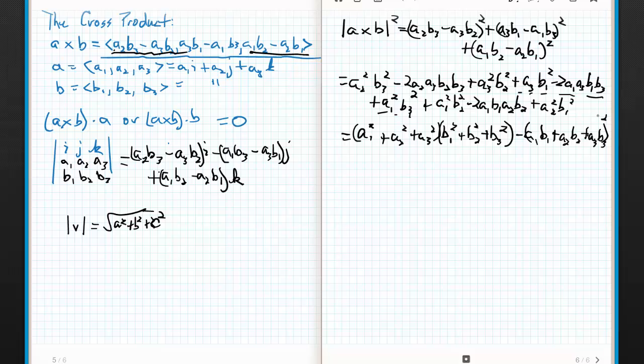And this is a1b1 plus a2b2 plus a3b3, and this guy is squared. Now, let's look at what we got. What is this? Well, that's the magnitude of a squared, isn't it? This is just going to be magnitude of the vector a squared. Likewise, this is going to be the magnitude of vector b squared. And then this is, what's this? Well, a1b1 plus a2b2 plus a3b3 is just a dot b. So, this guy is a dot b, and that guy is squared.